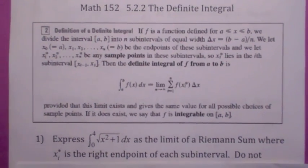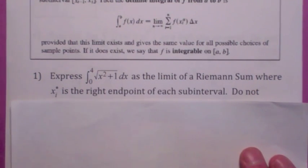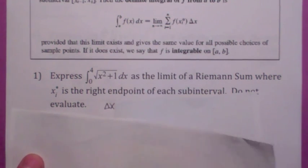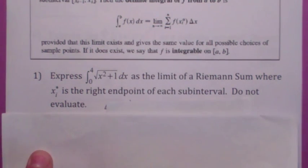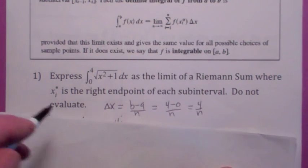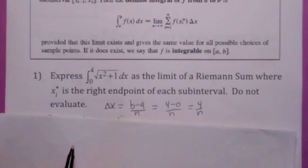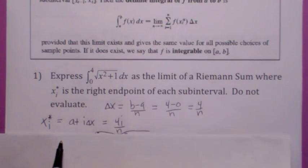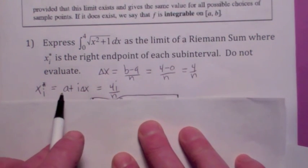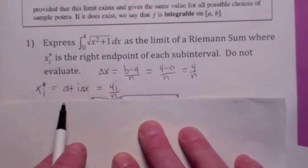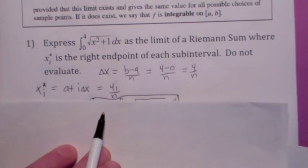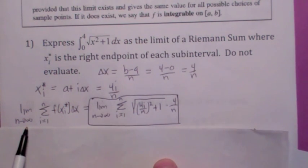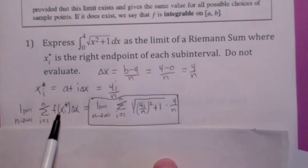Let's just practice using the definition. Express this definite integral as a limit of a Riemann sum, where x sub i star is the right endpoint of each sub-interval. We first compute delta x: delta x would be 4 minus 0 over n. Since we're using the right endpoints, x sub i star is always a plus i delta x. Since a is zero, it becomes i delta x, or 4i over n. So the definite integral from 0 to 4 of the square root of x squared plus 1 dx is the limit as n goes to infinity of the sum i equals 1 to n of f of x sub i star times delta x.